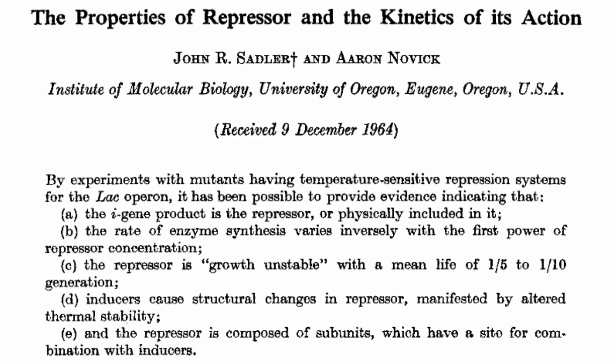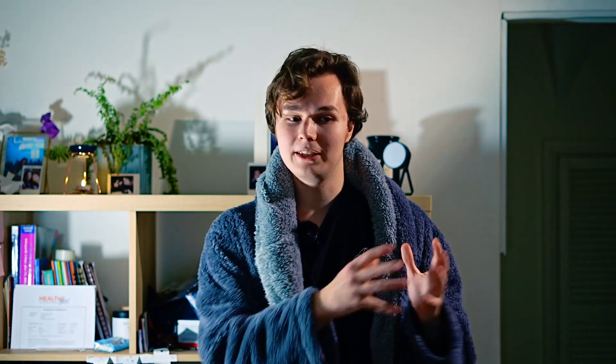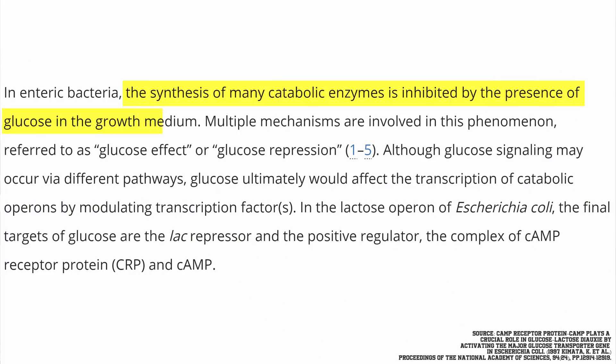The very first time we thought of a biological circuit was with the discovery of the lac operon. With E. coli, if they're presented with two different choices of sugars, if glucose is available they'll actually turn off their lactose digesting machinery so that they can more efficiently eat the glucose, and just wait until the glucose is depleted and then eat the lactose.